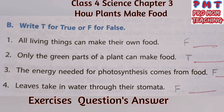Write T for true or F for false. First: All living things can make their own food – False, because animals can't make their own food. Second: Only the green parts of a plant can make food – True, because chlorophyll is the essential substance to make food. Third: The energy needed for photosynthesis comes from food – False, because the energy needed for photosynthesis comes from sunlight. Fourth: Leaves take in water through their stomata – False, because leaves take in water through veins.